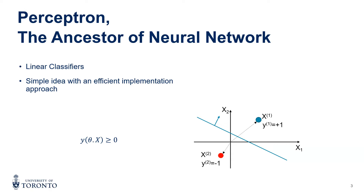The whole idea of training a perceptron is based on the inner product. If you find the optimal line, then based on inner products, Y multiplied by the inner product of theta and X is going to be always positive.